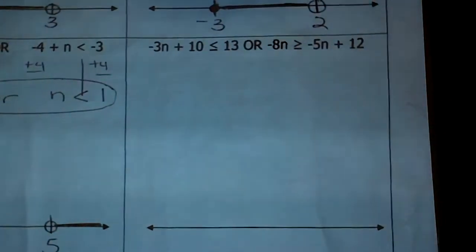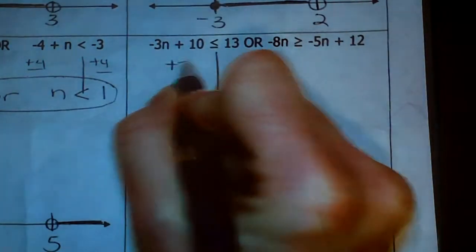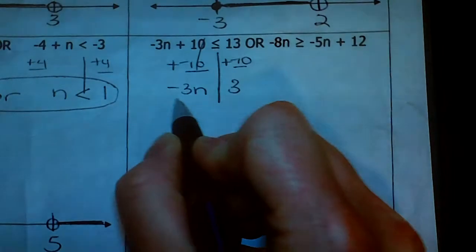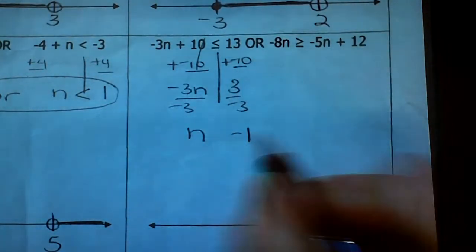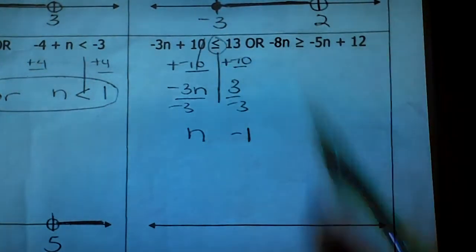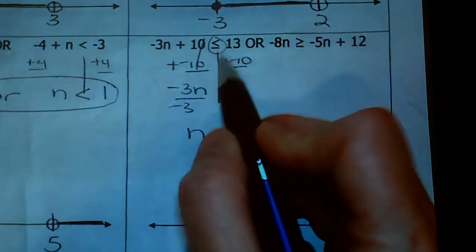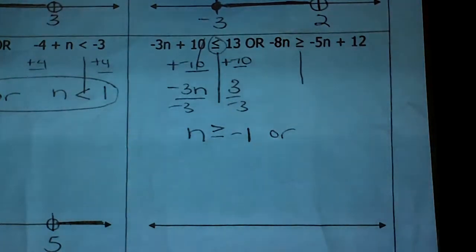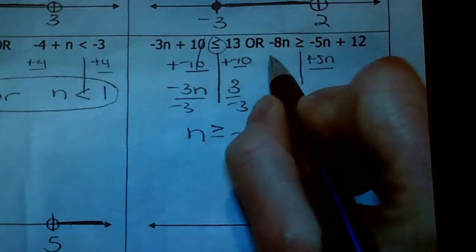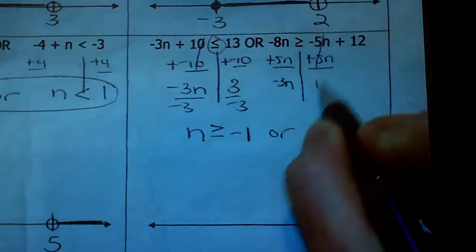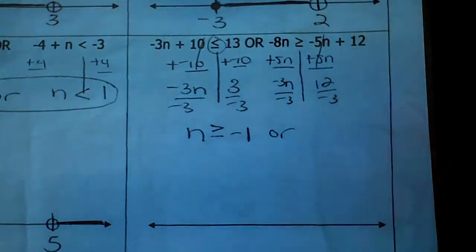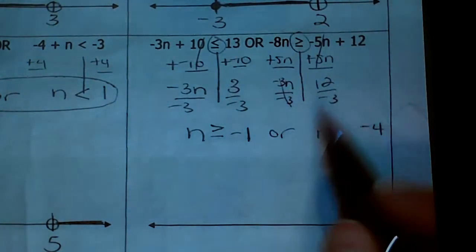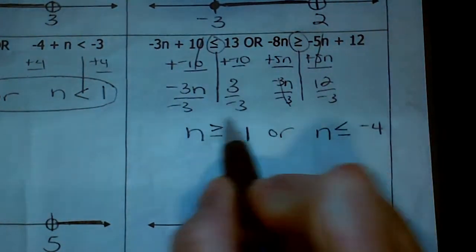These ones are a little more complicated, but it's still an 'or.' For the first equation, add negative 10 to each side: negative 3n is less than or equal to 3, then divide by negative 3. Because we divided by a negative, we flip the inequality sign — so n is greater than or equal to negative 1. For the second, move the 5n term: left side becomes negative 3n, right side becomes 12. Divide by negative 3 and flip the sign: n is less than or equal to negative 4. Solution: n ≥ negative 1 or n ≤ negative 4.